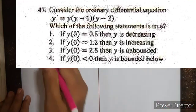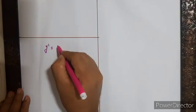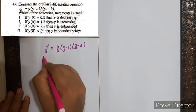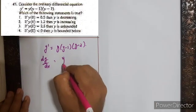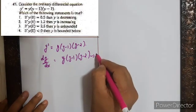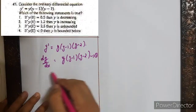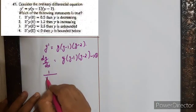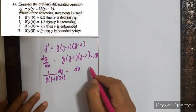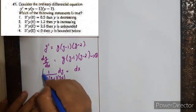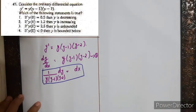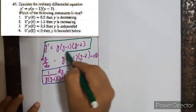Given y' = y(y-1)(y-2), that is dy/dx = y(y-1)(y-2). This is an equation in variable separable form. If we want to solve this, we get dy / [y(y-1)(y-2)] = dx. But solving this takes a lot of time, so we will use some tricks to find the answer.